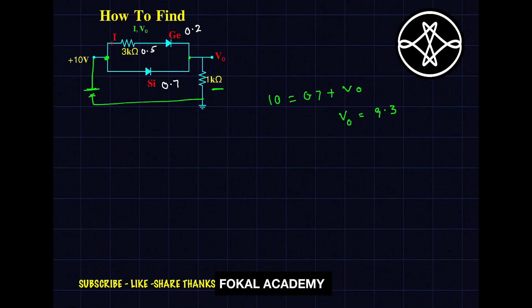Next, how to find current I, which passes through the 3kΩ resistor? In the 3kΩ resistor, we have the voltage drop and resistance. Now we can easily find current I by using Ohm's law. That is, I equals V by R, where V is 0.5V, the voltage drop across 3kΩ. So 0.5V divided by 3kΩ. By simplifying this, we get 0.1667 mA.